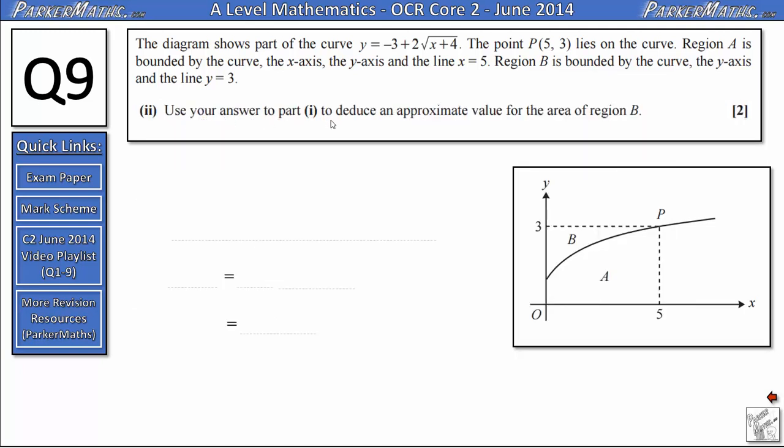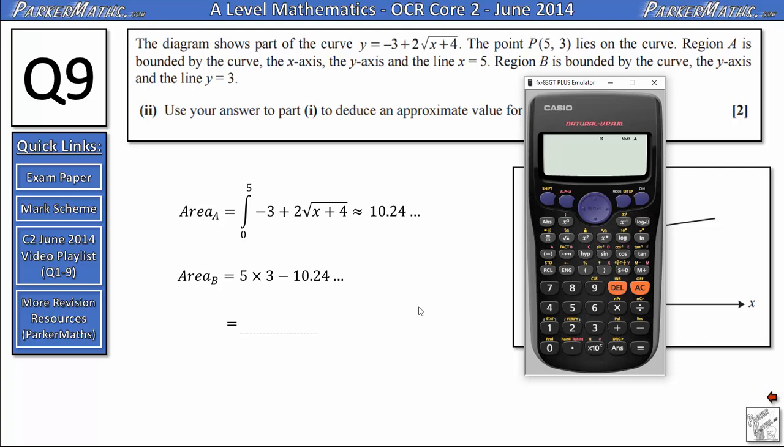In part 1, we showed the area of region A was 10.24. So to find the area of region B, we start by finding the area of this rectangle here, which is just 3 times 5. And we subtract the area of region A, the part that we don't want. So subtract 10.24. As we've stored the 10.24 as A on our calculator, we just need to do 15 subtract A. And that gives us 4.75 if we round to three significant figures.